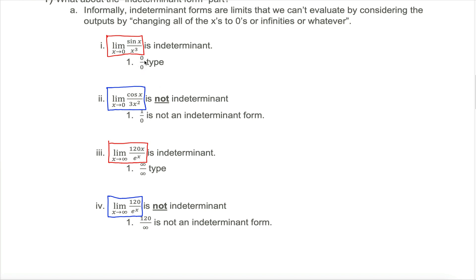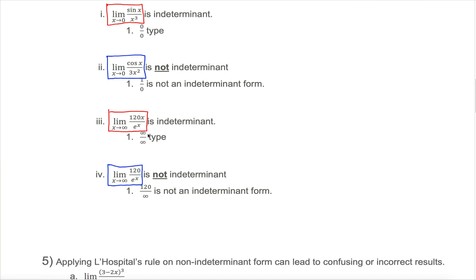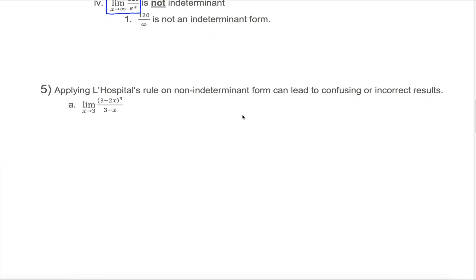0 divided by 0 is one of our indeterminate forms. Another indeterminate form is the infinity divided by infinity type, which we get when considering the limit as x approaches infinity of 120x divided by e to the x. The really important thing is you can only apply L'Hopital's rule to limits that are indeterminate forms.